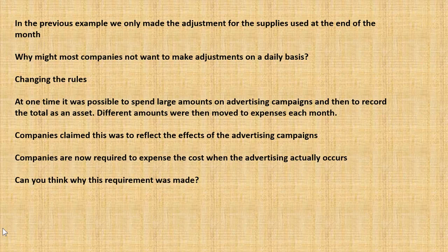Rules change over time. At one time, companies spending millions on advertising campaigns were allowed to record the total as an asset and then choose how much to move to expenses each month, claiming this reflected the actual effect of the advertising. Companies are now required to expense the cost when the advertising actually occurs, because otherwise you may not be presenting an accurate figure in your accounts.